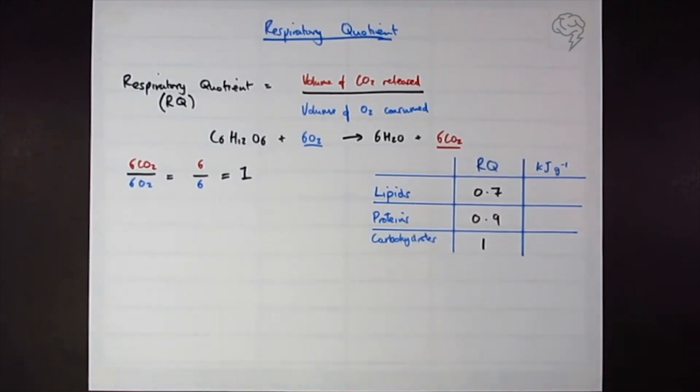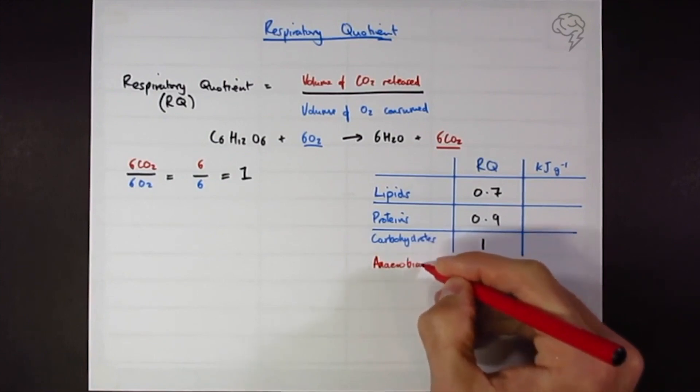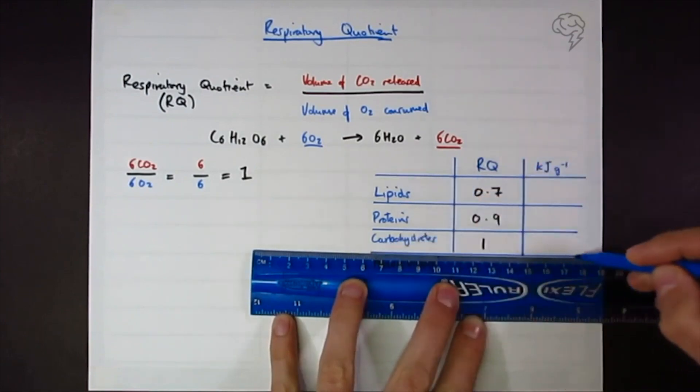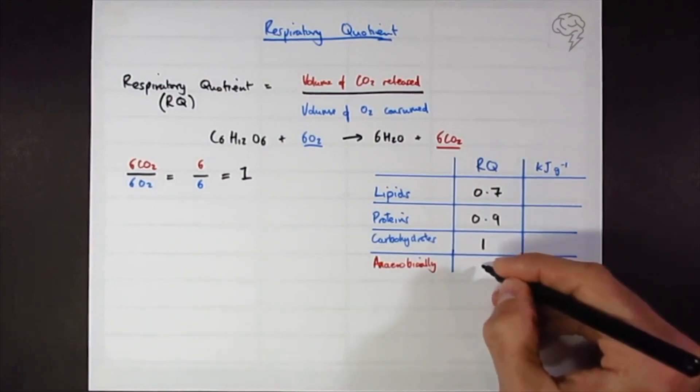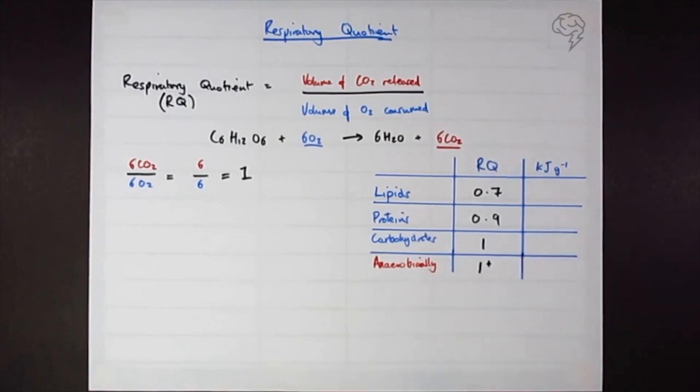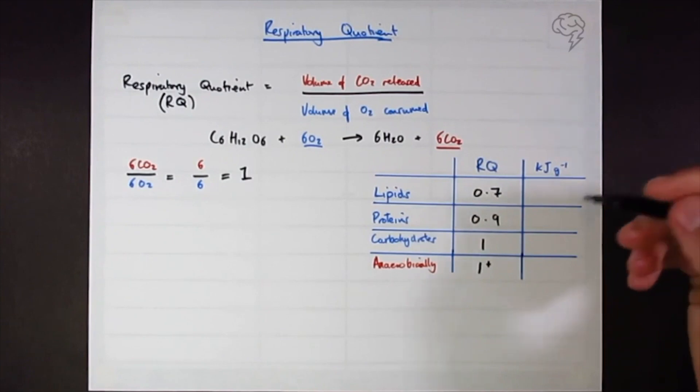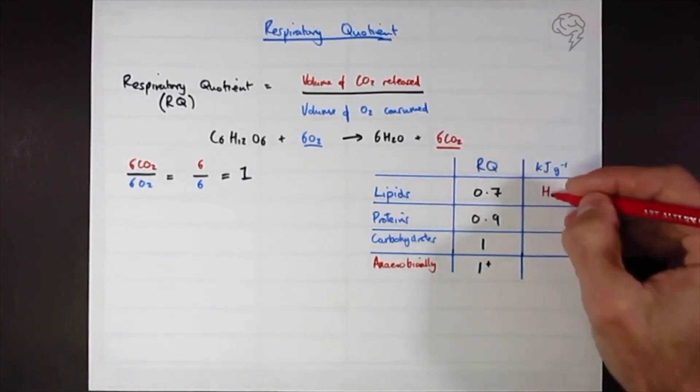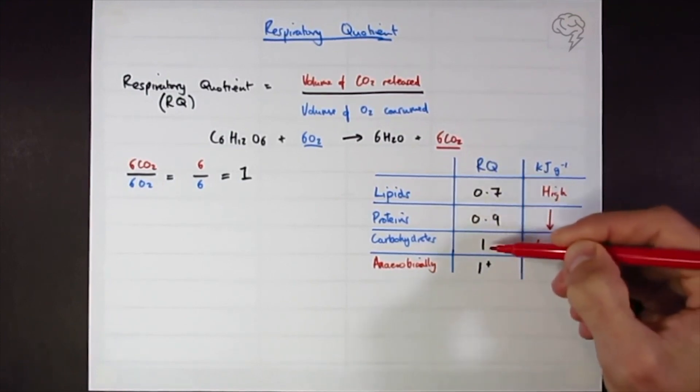If you're respiring partially or fully anaerobically, add another row. For these guys it's going to have an RQ of more than one, one plus. The energy that these compounds contain also has to do with their chemical bonds. I'm just going to write high to low so we can use this as a little indicator of how much energy they have per gram.